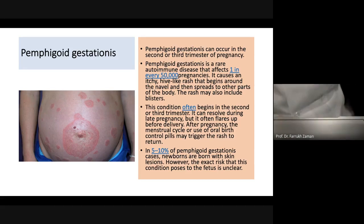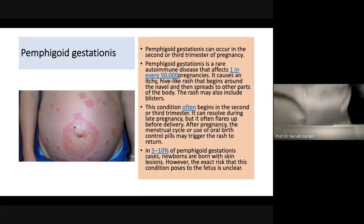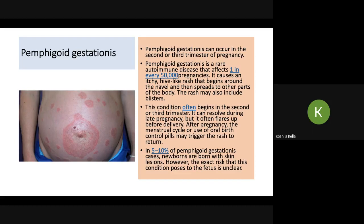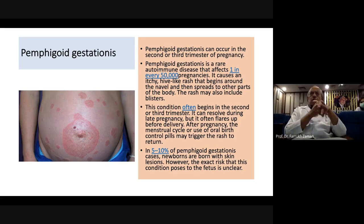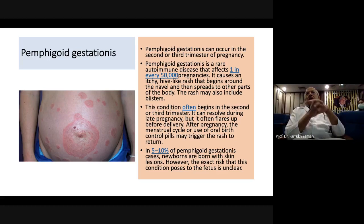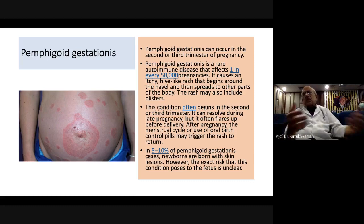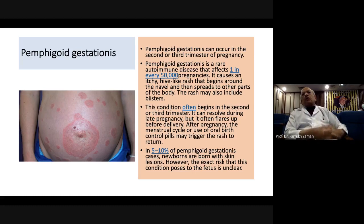In response to a question about route of delivery: if there is no obstetric contraindication to vaginal delivery, labor should be induced at 36–37 weeks. A caesarean section would be carried out on its own obstetric merits. ICP per se is not an indication for caesarean section.